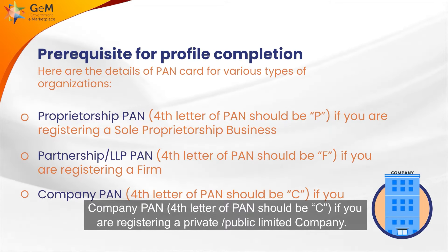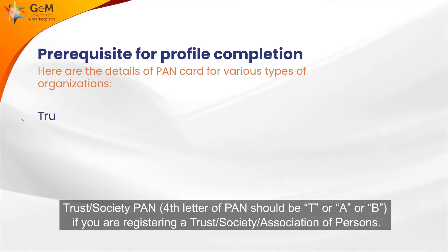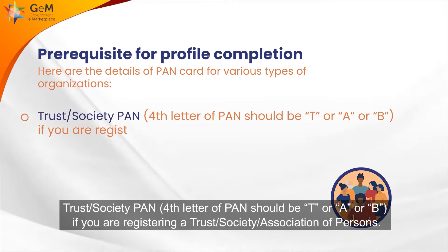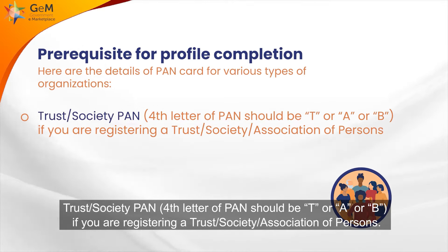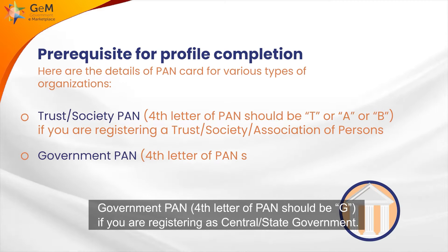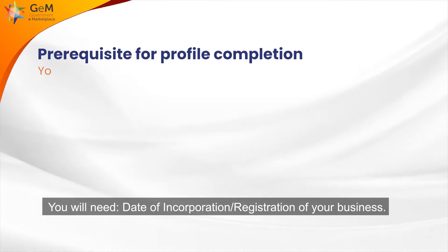For company, the fourth letter of PAN should be C if you are registering a private or public limited company. For trust, society, or association of persons, the fourth letter of PAN should be T, A, or B. For government, the fourth letter of PAN should be G if you are registering as a central or state government entity.